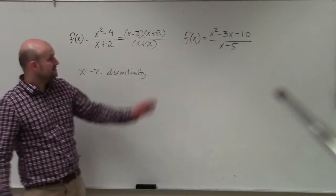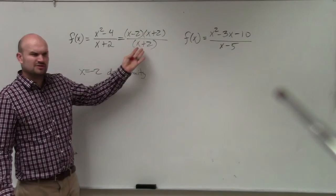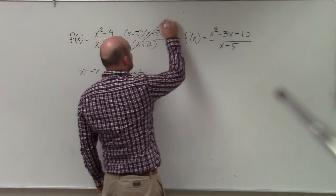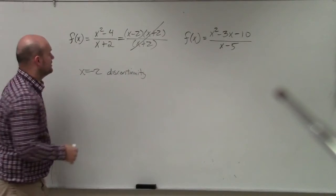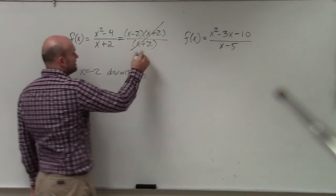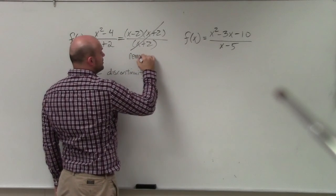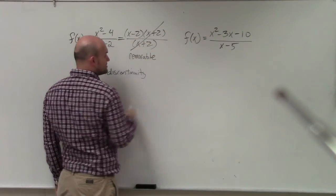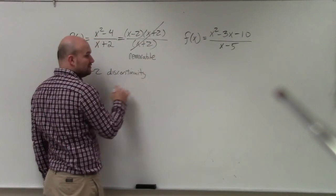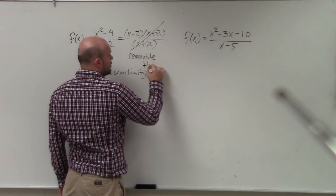Do you guys see that x plus 2 divided by x plus 2 are exactly the same? So by the division property, they divide to 1. So what that means is that is removable because it can be factored out. And since it's removable, we call it a hole.